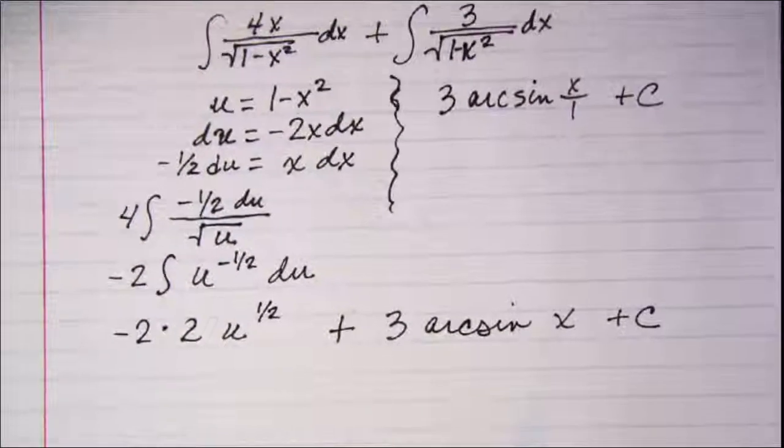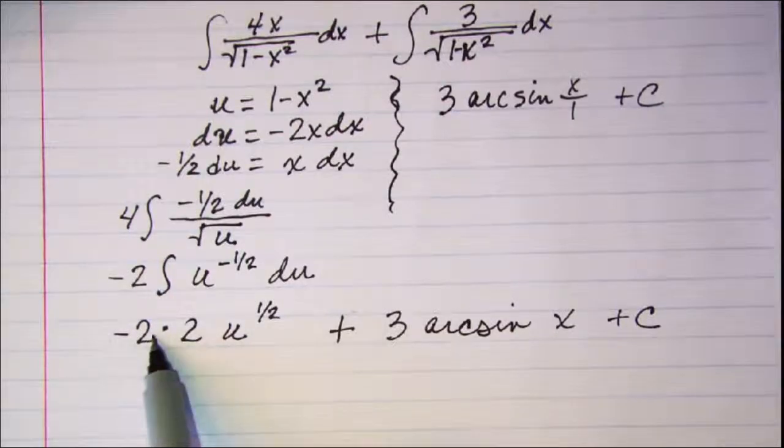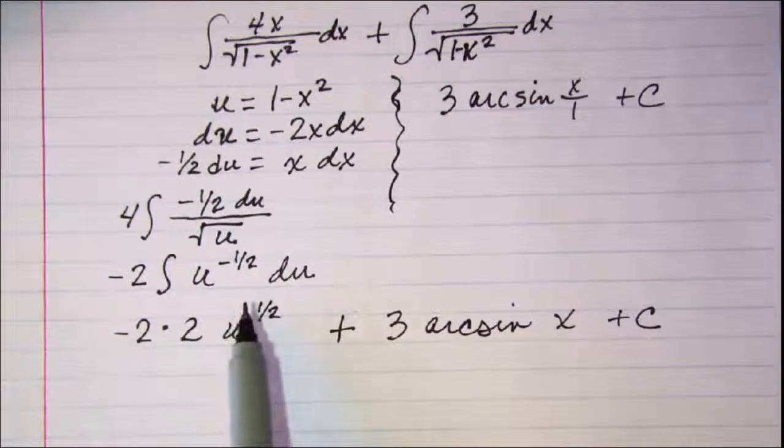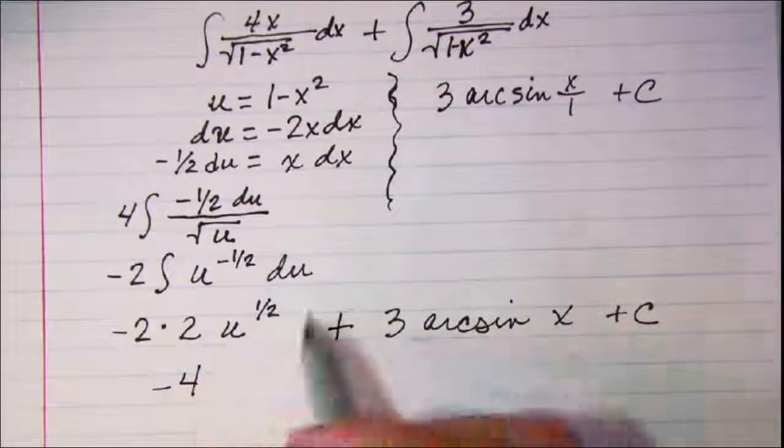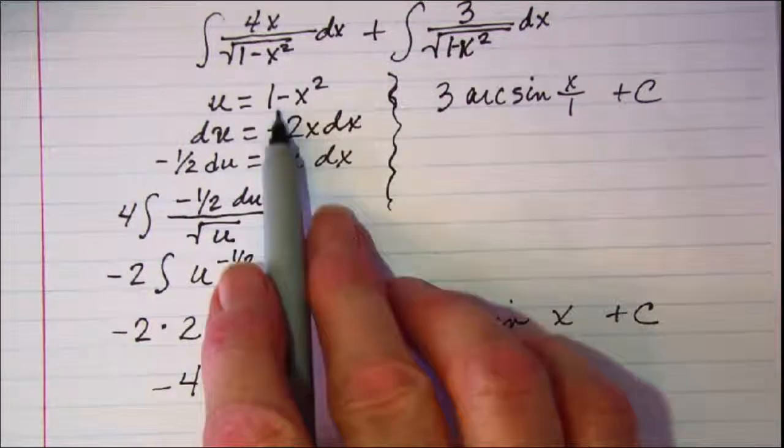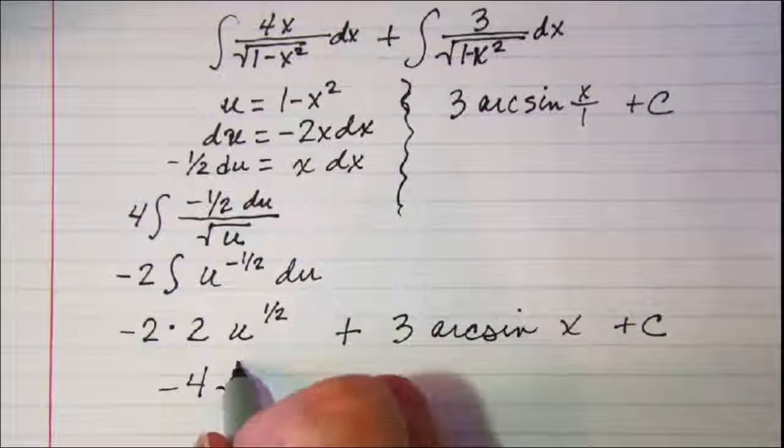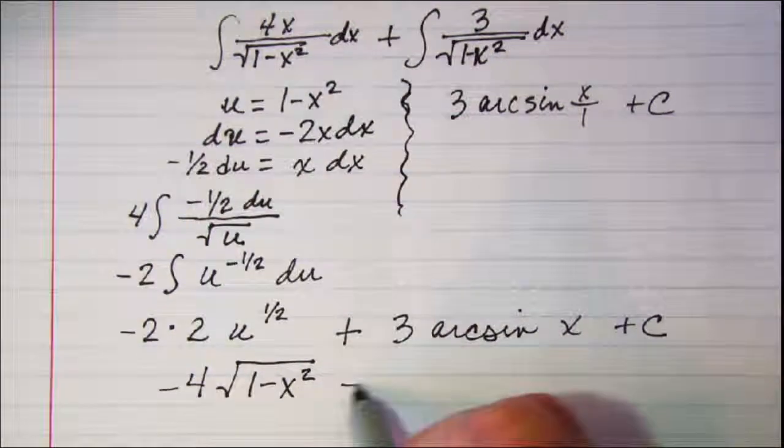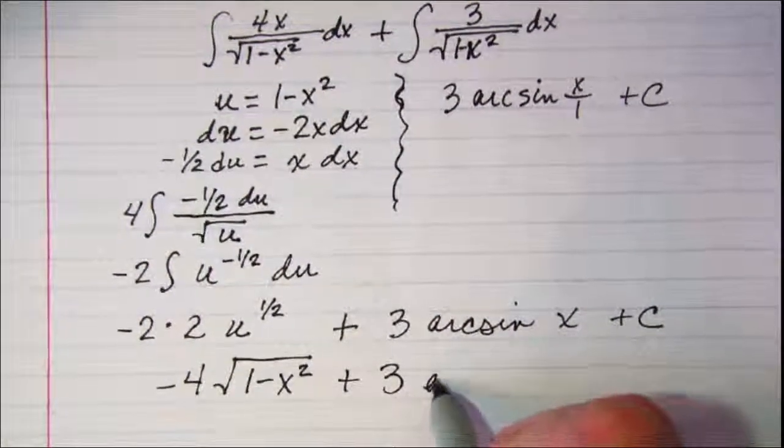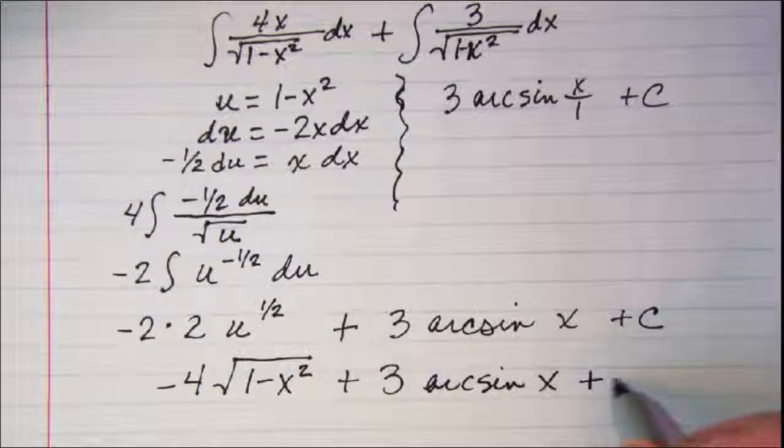And my only other thing that I need to do is sub back in for u, and do this multiplication. So I have a negative 4, and then u is 1 minus x squared, so this is square root of 1 minus x squared plus 3 arc sine x plus a constant.